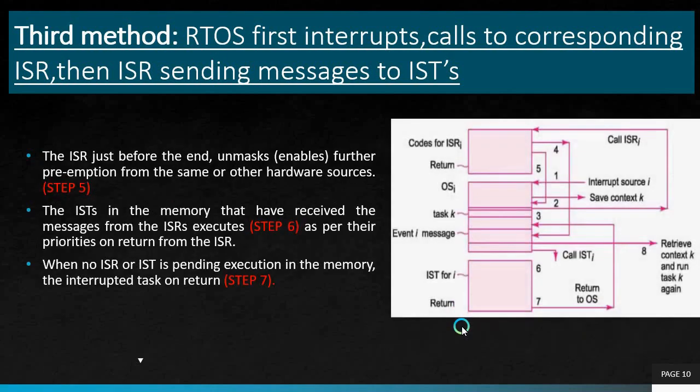Just before ending (step 5), the ISR unmasks further preemption from the same or other hardware sources. The ISDs stored in memory that have received messages from the ISR may then execute according to their priorities — this is step 6. In step 7, when no more ISRs or ISDs are pending for execution in memory, control returns to the OS. Step 1 is when the interrupt occurs and the RTOS gets the hardware source code.